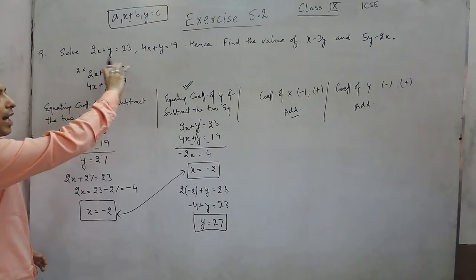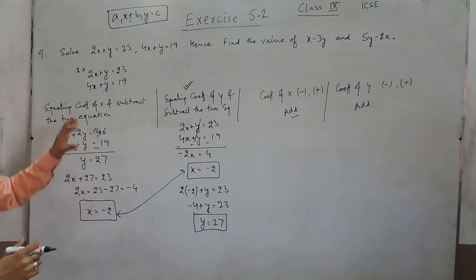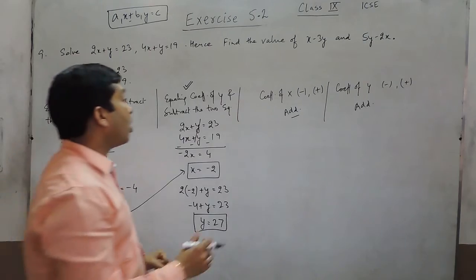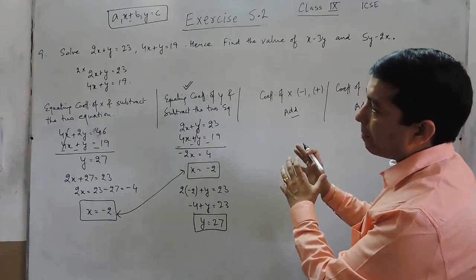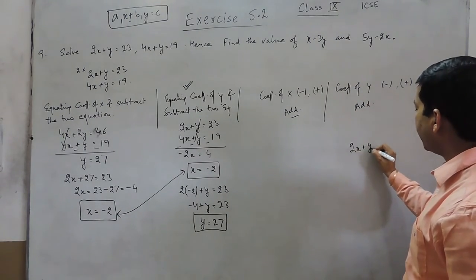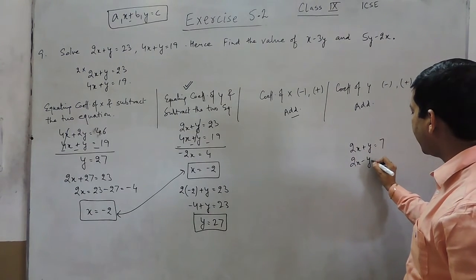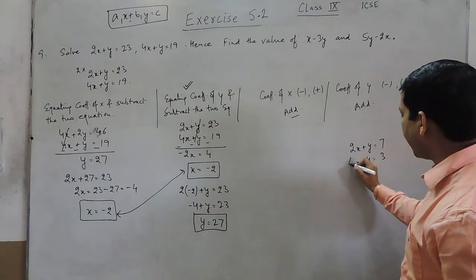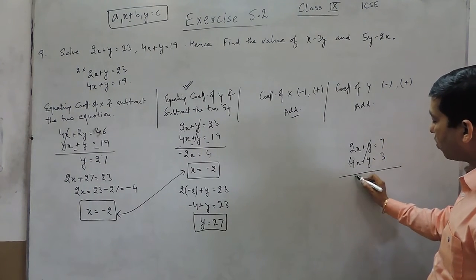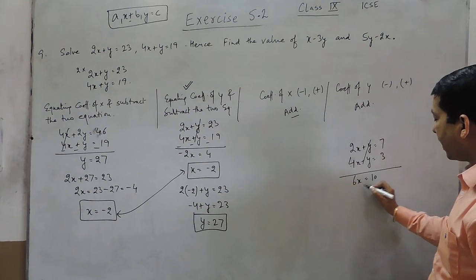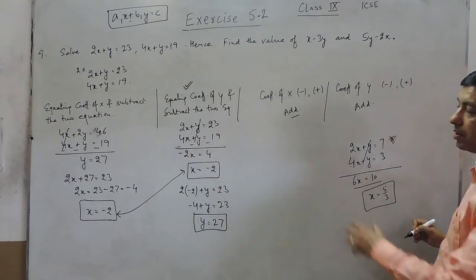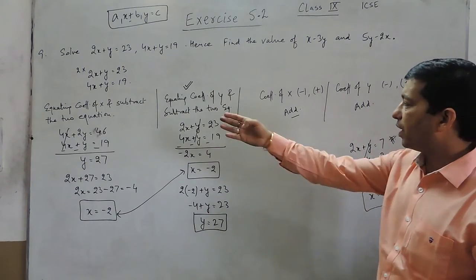But we have to understand by looking at the equation that either it is better to equate the coefficient of y or the coefficient of x. But if the coefficient of x or y are same and their terms are positive and negative, suppose I have to solve a question like 2x plus y equals 7 and 4x minus 5 equals 3. It is always better that directly we can add the coefficient of y because this can be cancelled out on its own, 6x becomes 10, and we can directly get the value of x as 5 by 3. This is an example I am giving just so that you are very clear about solving the question by any of the 4 given methods.